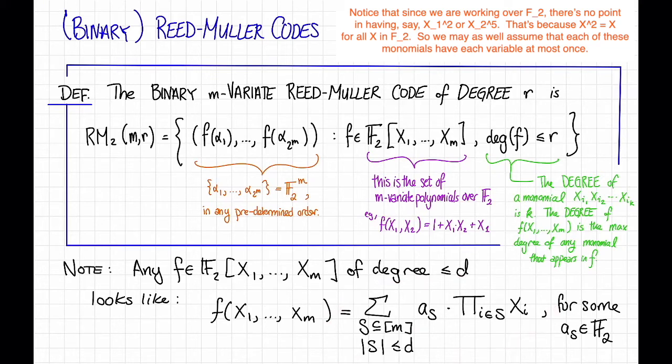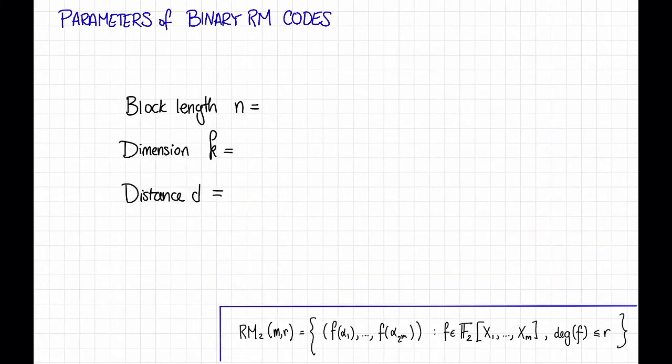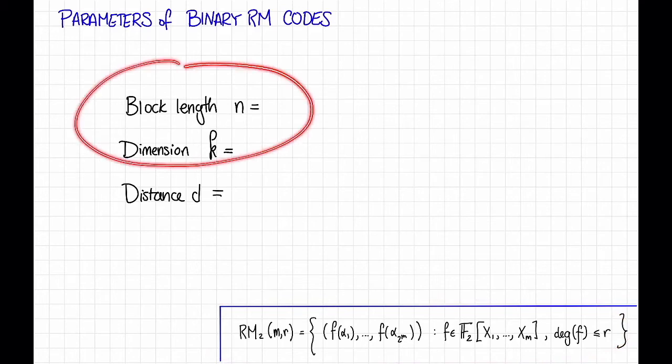Okay, so that's the definition of binary Reed-Muller codes. What sorts of parameters do these codes have? I've copied the definition of the Reed-Muller code down here. Why don't you pause the video for a second and try to at least fill in these two. What is the block length and the dimension of this code?